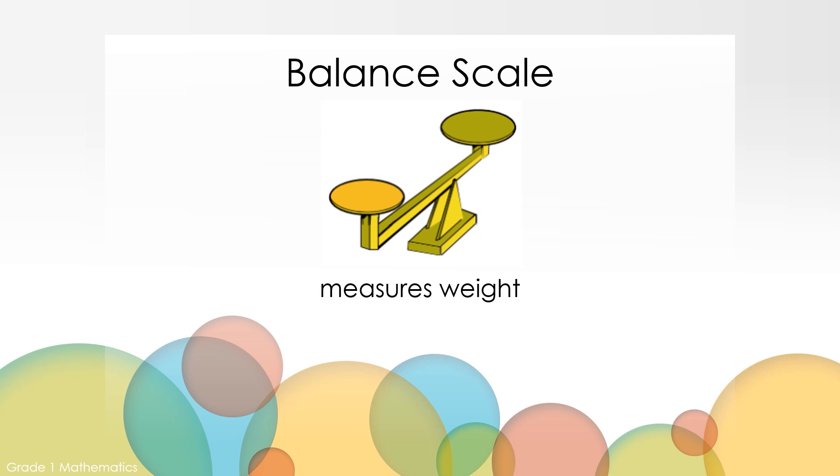Similar to our picture before with the books, this is called a balance scale. It measures weight. When one object is heavier than another object, it will be lower than the other higher object. Just like on a seesaw on the playground. If both objects weigh the same, then the scale will be level straight across. Practice your communicator skills and make a connection. Where else have you seen a balance scale be used in the real world?